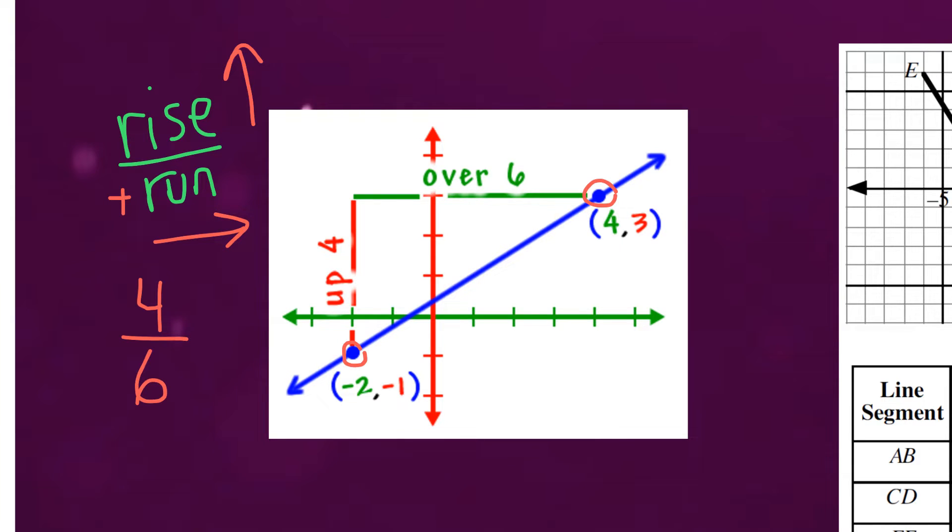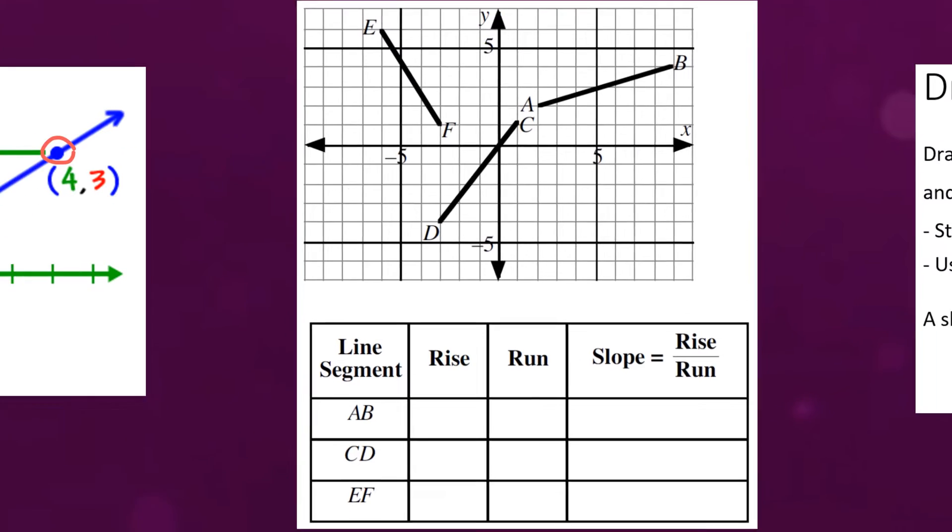So four over six if we think of it as a fraction we can also simplify it by dividing both of them by two. So the simplified version of the slope of this line would be two-thirds. Okay let's go ahead and try some more examples over here.